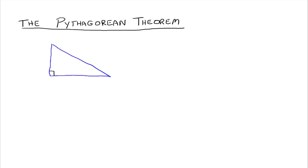A right triangle is a triangle that has a 90 degree angle in it. This little square down here in the corner signifies that this angle right here is a right angle and that it is 90 degrees. Any triangle that has a 90 degree angle as one of the three angles in it, that triangle is called a right triangle.